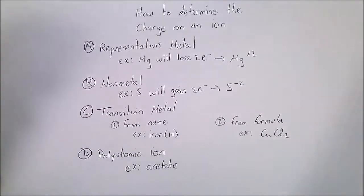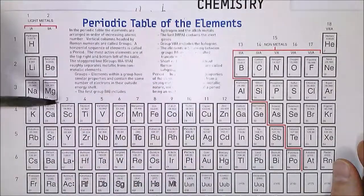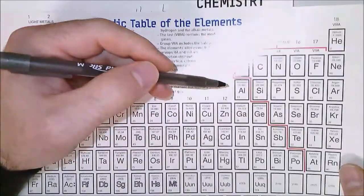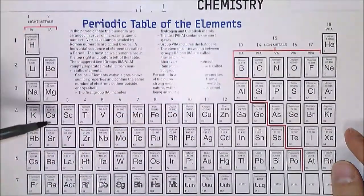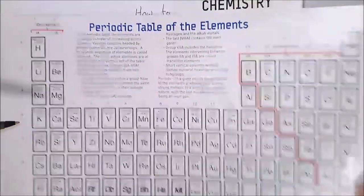Transition metals are located in group B here in the periodic table and cannot be predicted what their charge will be because they're too far away from their nearest noble neighbor to be counted on.